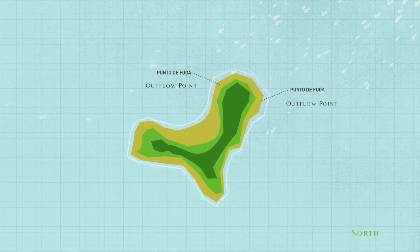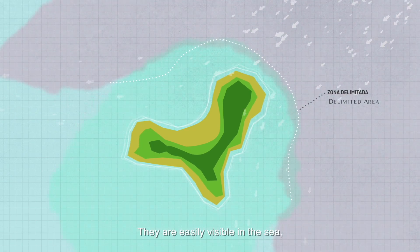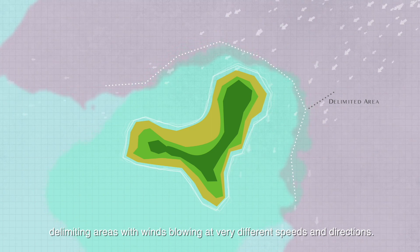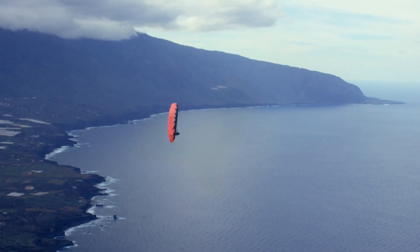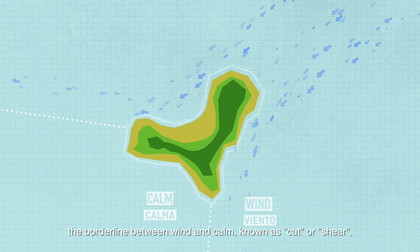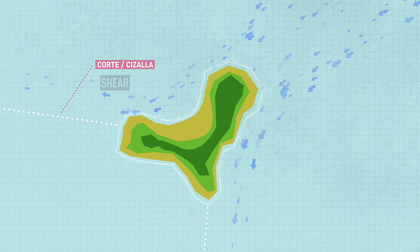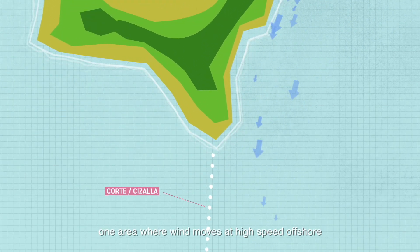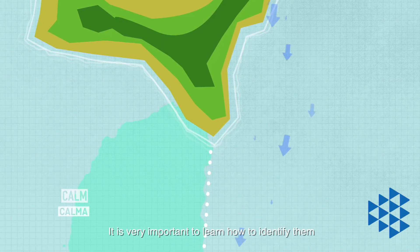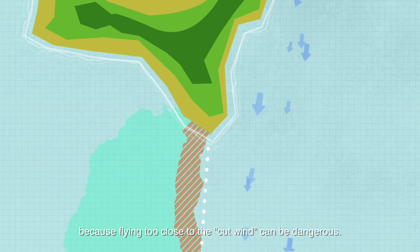The wind will escape through its vertices at a higher speed than when it was approaching the island. We must be aware of these outflow points — they are easily visible on the sea, delimited by areas with wind blowing in different speeds and different directions. The borderline between wind and calm, known as a cut or wind shear, limits two distinct areas: one where the wind moves at high speed offshore, and another sheltered calm area. It is very important to learn how to identify them, because flying too close to the wind cut can be dangerous.